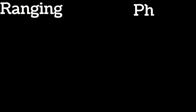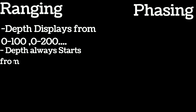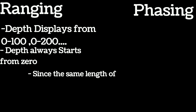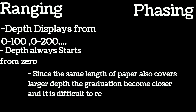In this video, I will talk about the difference between ranging and phasing of an echo sounder. In ranging, depth always starts from zero — like zero to one hundred, zero to two hundred, or zero to three hundred. Since the same length of paper covers a larger depth, the graduation becomes closer and it is difficult to read the depth accurately.